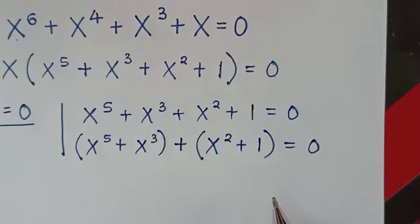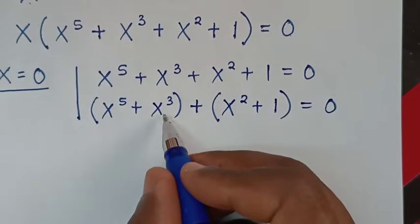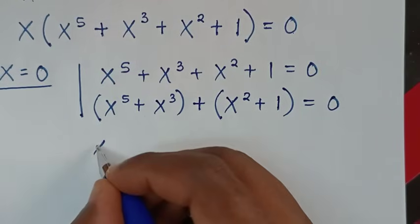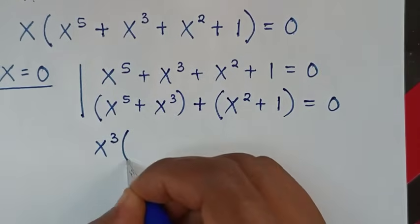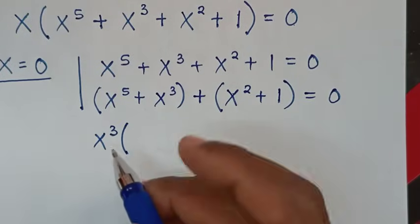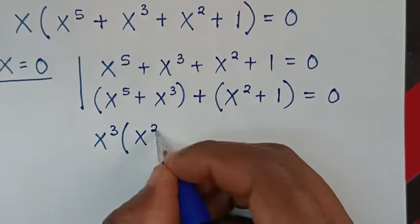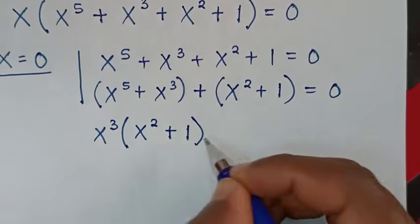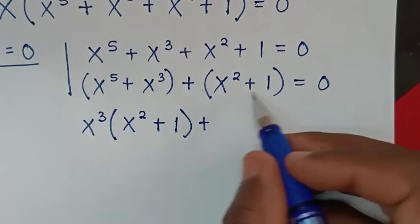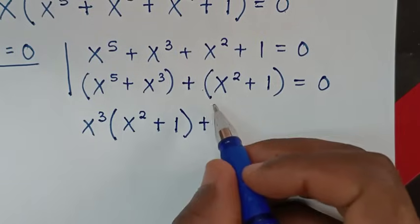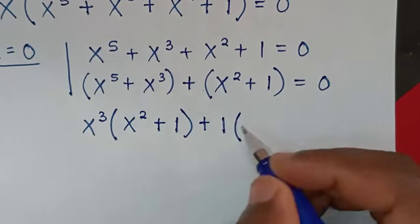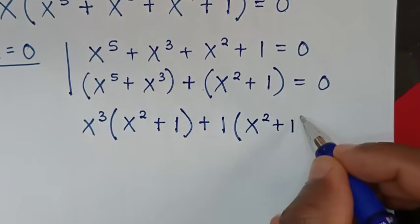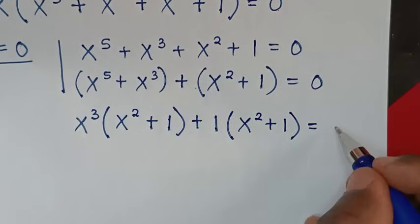Then in the next step, from x power 5 plus x power 3, x power 3 is common so we'll take x power 3 out of the bracket. Then x power 5 divided by x power 3 is x squared, plus x power 3 divided by x power 3 is 1. Then for the second group, we take 1 out of the bracket, giving 1 times x squared plus 1, equal to 0.